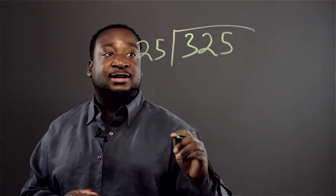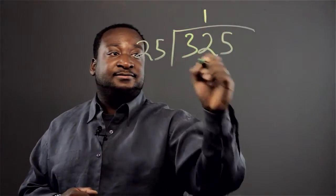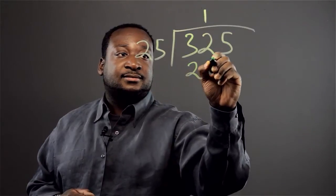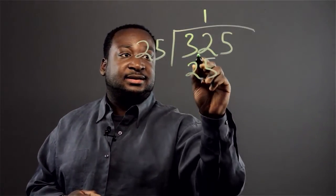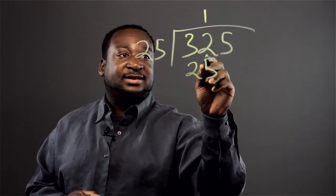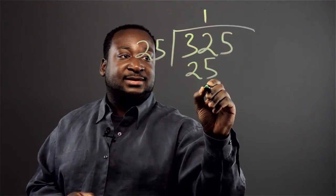So 25 goes into 32 how many times? One. And you're left with 25 from 32 that equals seven.